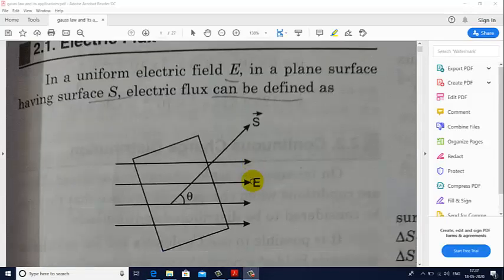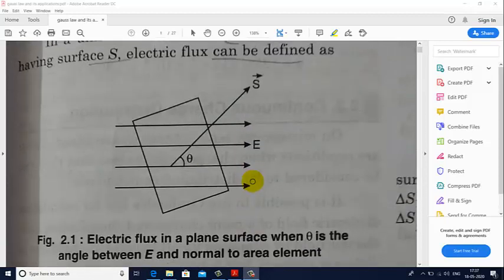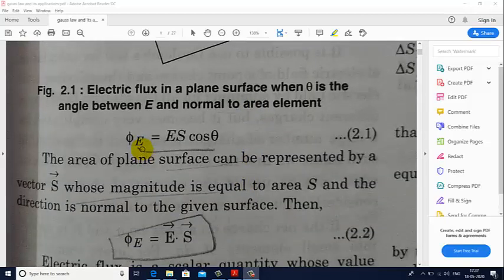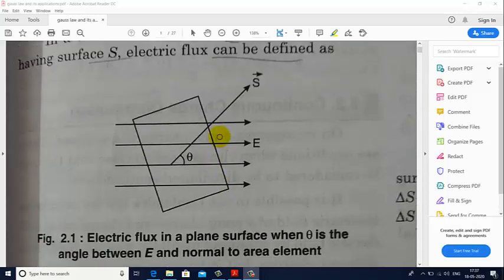The formula for electric flux can be given as phi E equals E into S cos theta, where E is electric field and S is the cross-sectional area of this surface. So basically this is a rectangular surface. We can have other surfaces as well, and the area of this rectangular surface will be perpendicular to the surface.